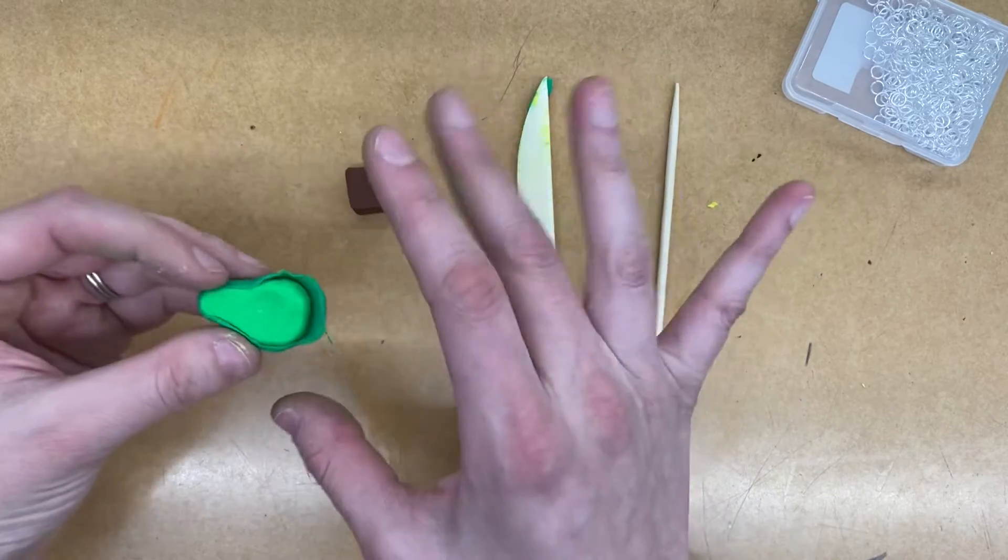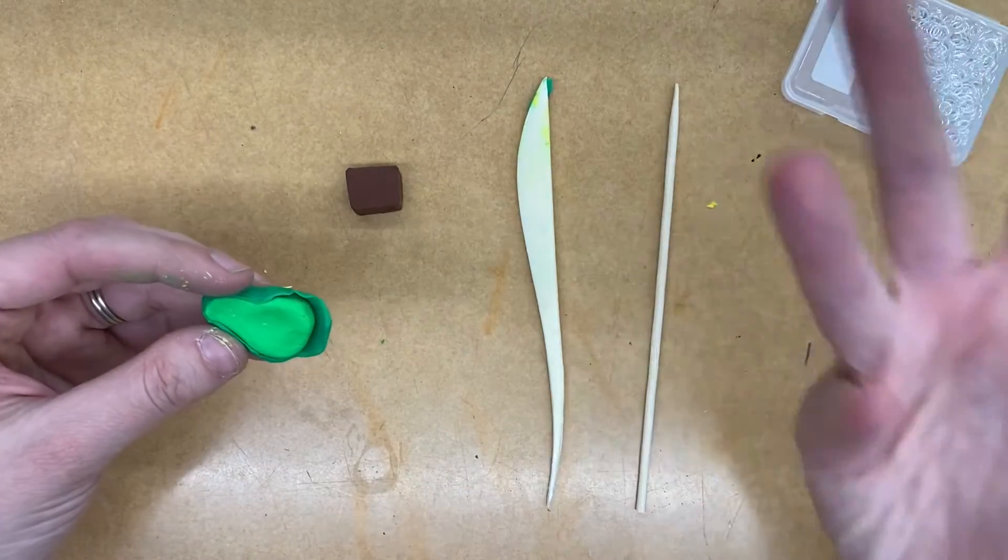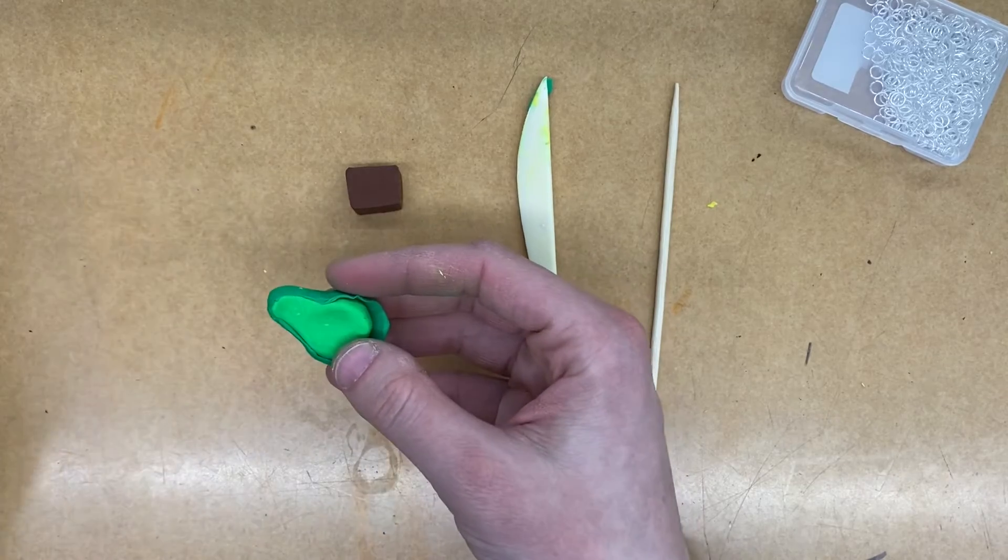I'm going to go ahead and get finished up with the sculpting, and then I'll tell you how to use a jump ring in order to make sure that we can actually attach this as a keychain.